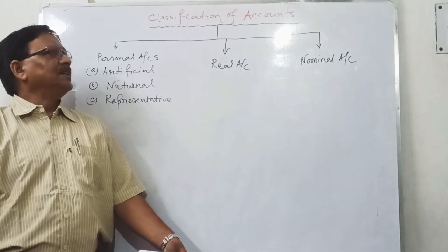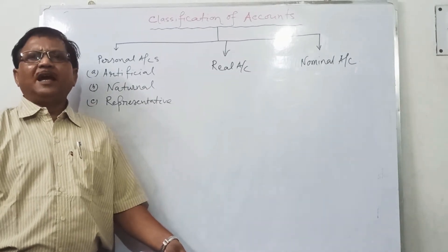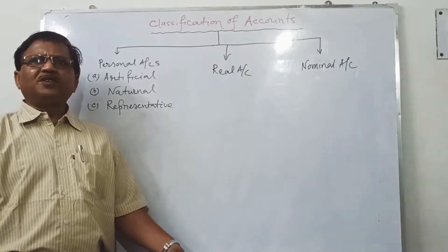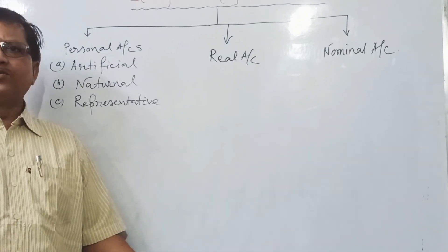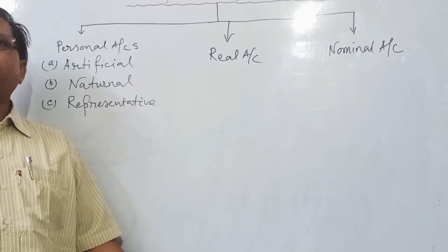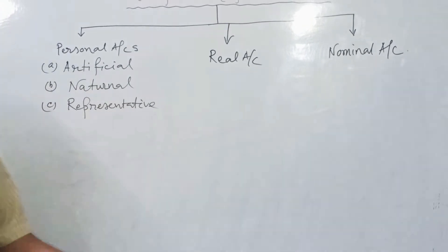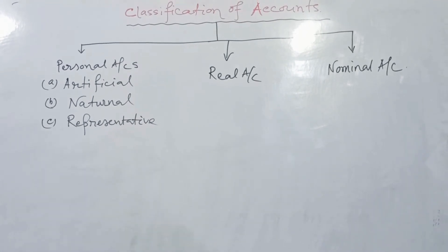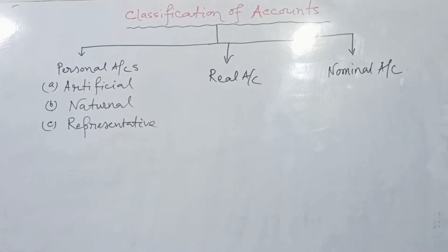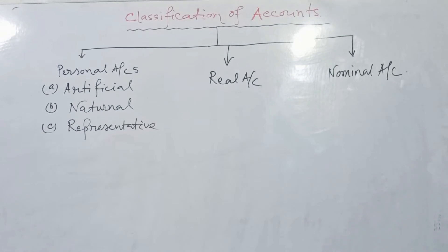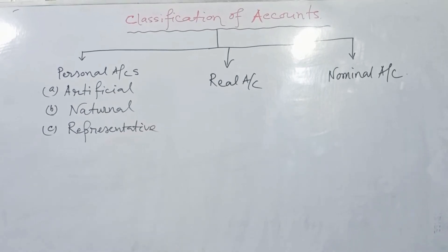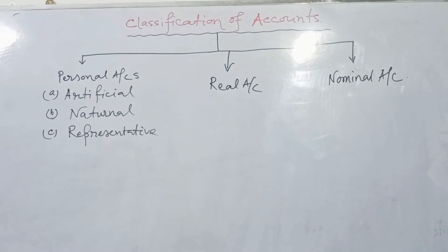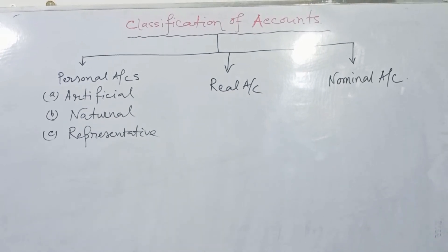Today we discuss the meaning of accounts and their classification. An account means we keep a separate record of each asset, liability, expense, and income individually. The place where such a record is maintained is known as an account.